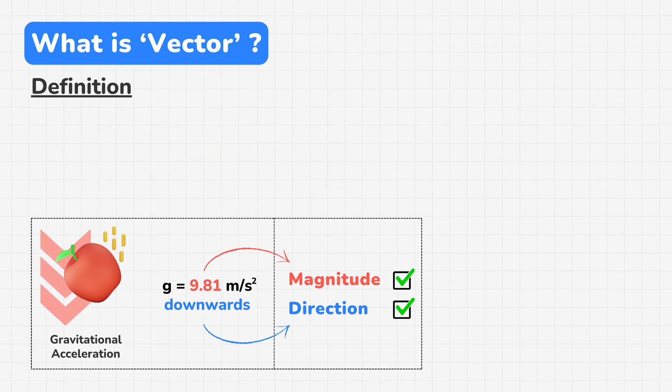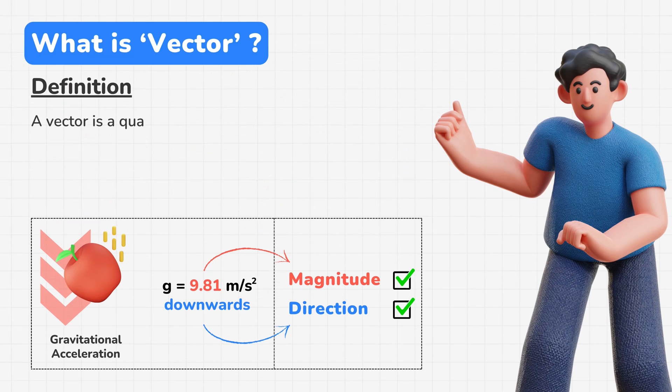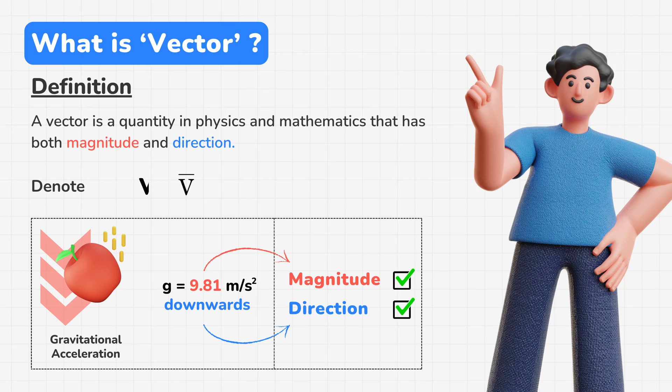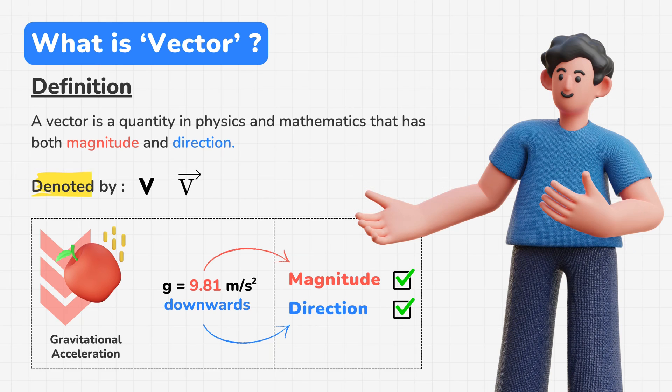So by definition, a vector is a quantity in physics and mathematics that has both magnitude and direction, and these vectors are denoted by bold letters or letters with arrows on top, just like this.